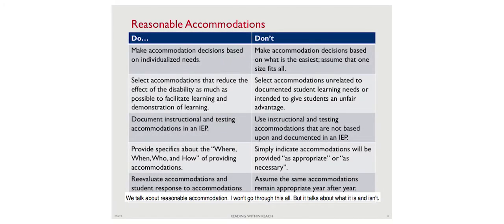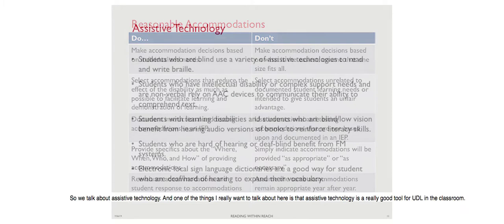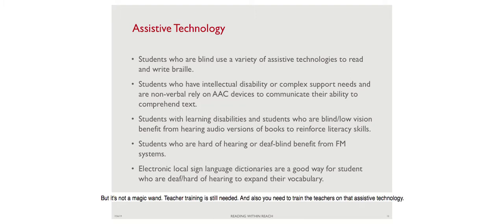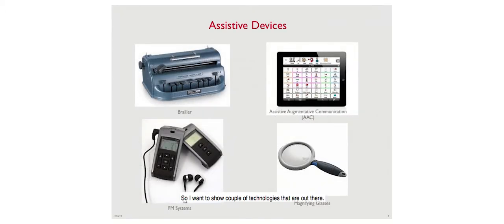Regarding reasonable accommodations - some children may need additional time, but that doesn't mean giving them the answers in advance. The toolkit explains what accommodations can be. Assistive technology is a really good tool for UDL in the classroom - it can help change motivation and help children receive and express information. But it's not the magic wand. Teacher training is still needed, and teachers need to be trained specifically on that assistive technology.